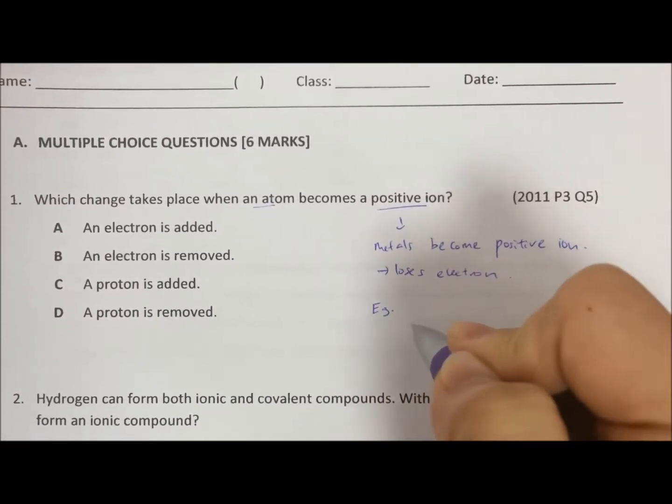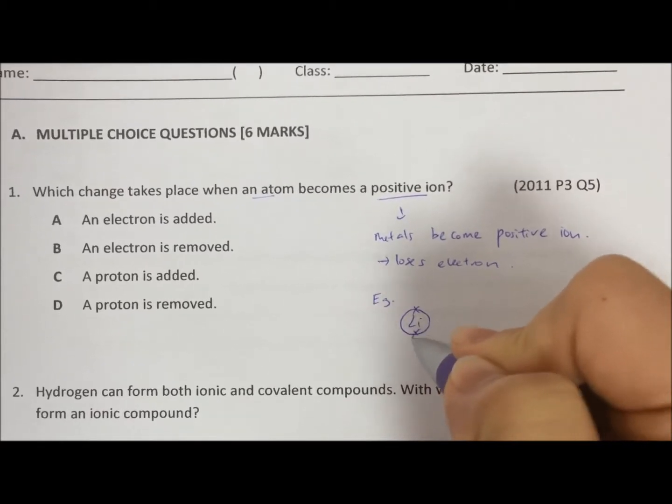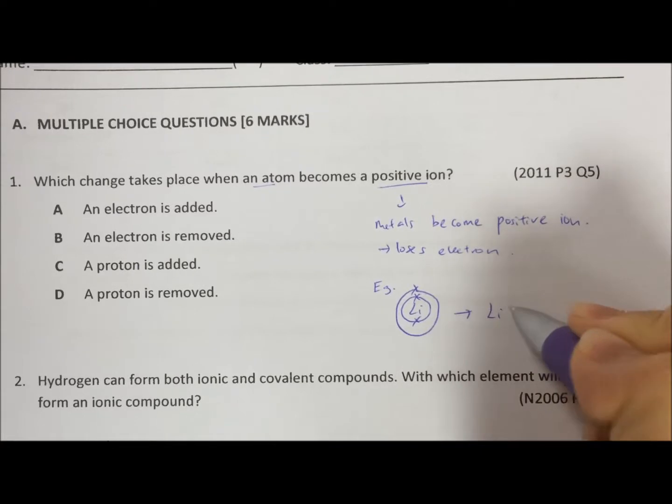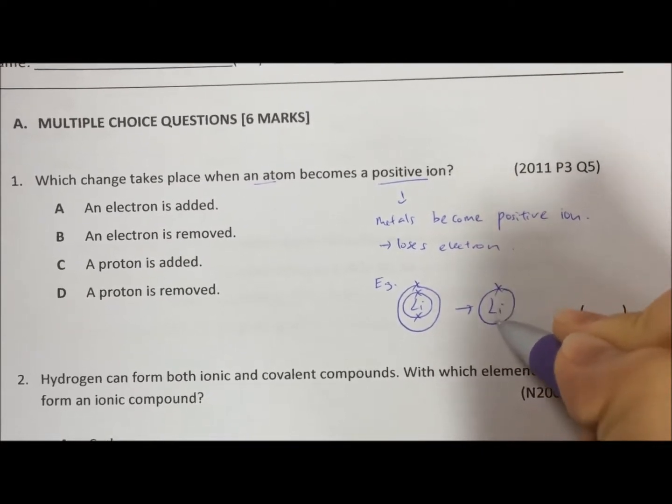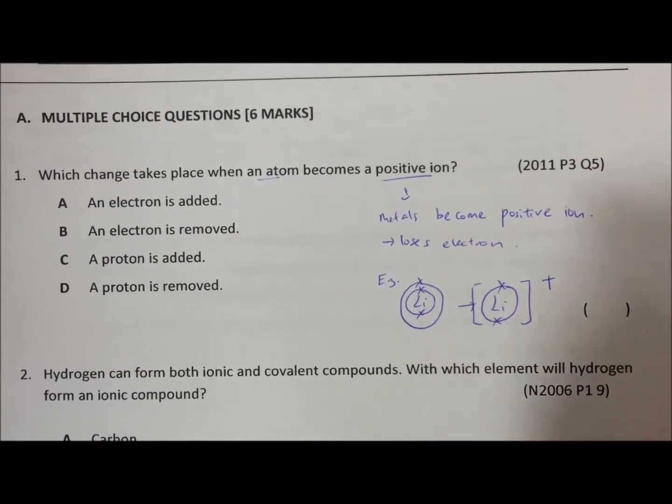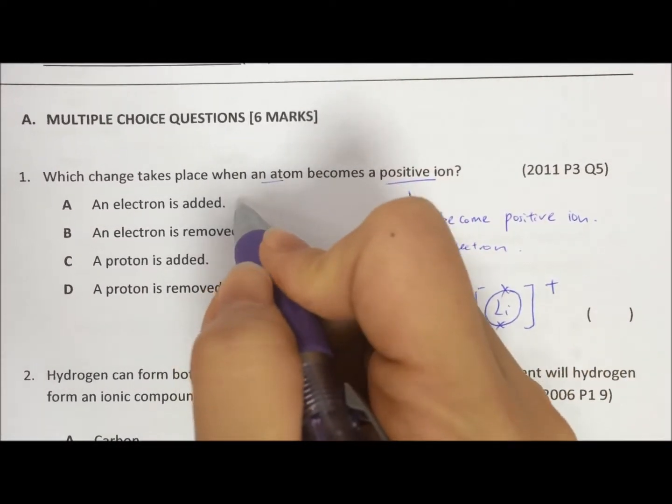If you don't know, you can take an example. For example, lithium. Lithium has 3 electrons, 2.1. So to have a completely filled valence shell, it will lose 1 electron. So that's where it becomes positive. So it is the loss of electron.